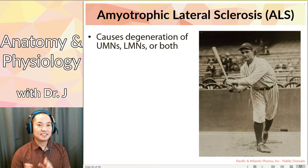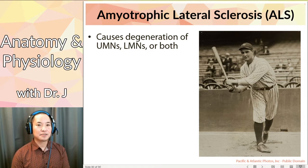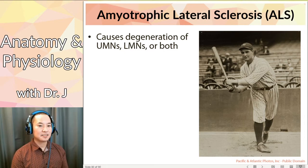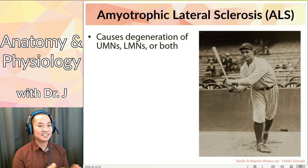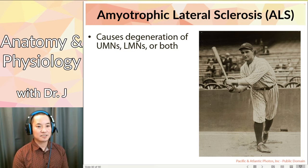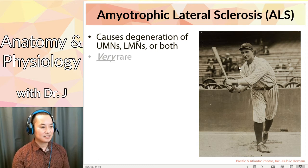ALS causes degeneration of upper motor neurons, lower motor neurons, or sometimes both. This is all about conscious control of your muscles. So if you have degeneration and lesions in the neurons that control your voluntary muscles, you're going to lose the ability to control your muscles and contract.